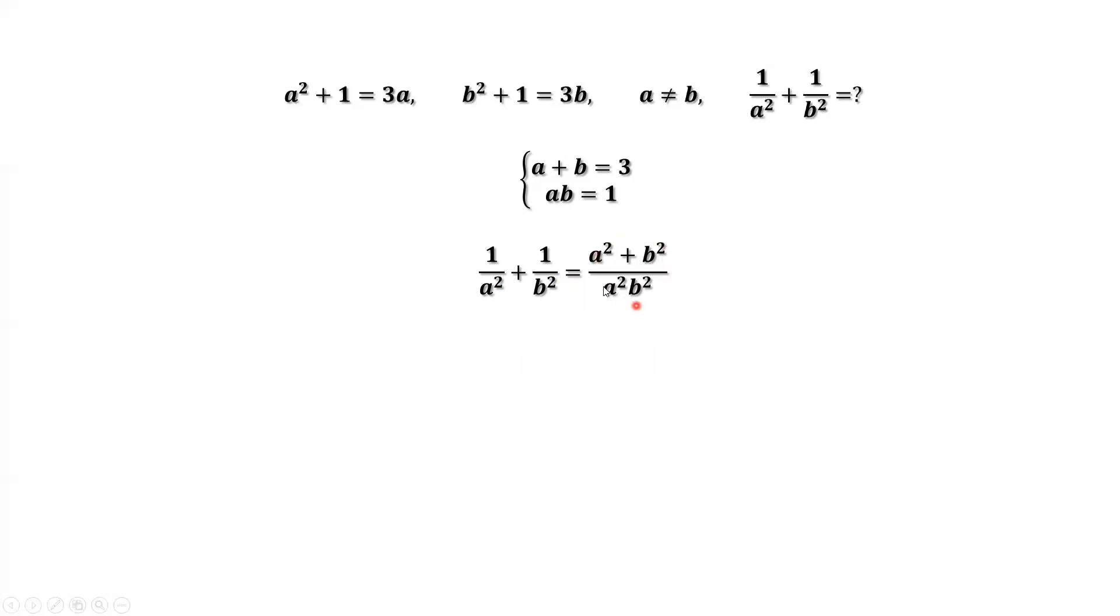From the right-hand side, we want to use this result to simplify to find the final answer. This means we want to rewrite the right-hand side in terms of a plus b and a times b.